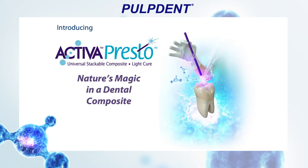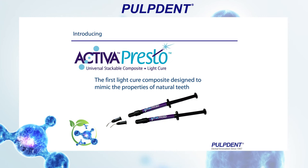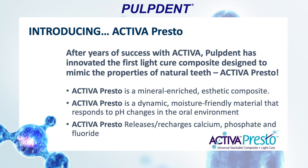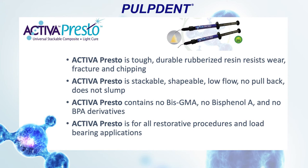Now let's talk about the new composite material and ionic resin called Activa Presto. After years of success with Activa Restorative, Pulp Dent has innovated the first light-cured composite designed to mimic the properties of natural teeth. Activa Presto is a mineral-enriched aesthetic composite — a dynamic, moisture-friendly material that responds to pH changes in the oral environment. It releases and recharges calcium, phosphate, and fluoride. It's tough, durable, rubberized resin resistant to wear, fracture, and chipping. It's a stackable, shapeable, low-flow flowable material with no pullback and no slump. It contains no bis-GMA, no bisphenol-A, and no BPA derivatives, and is useful for all restorative procedures and load-bearing applications.